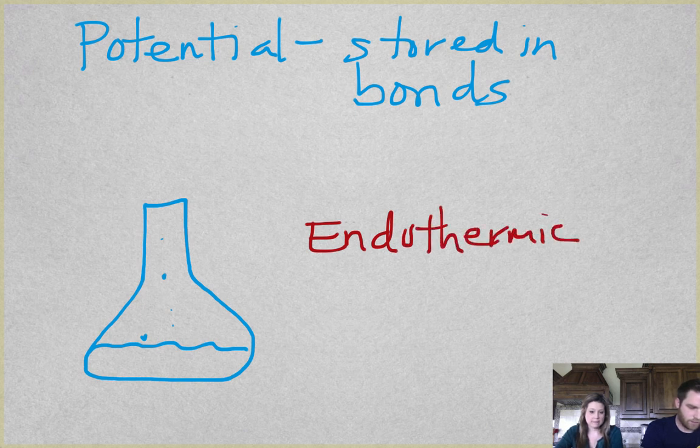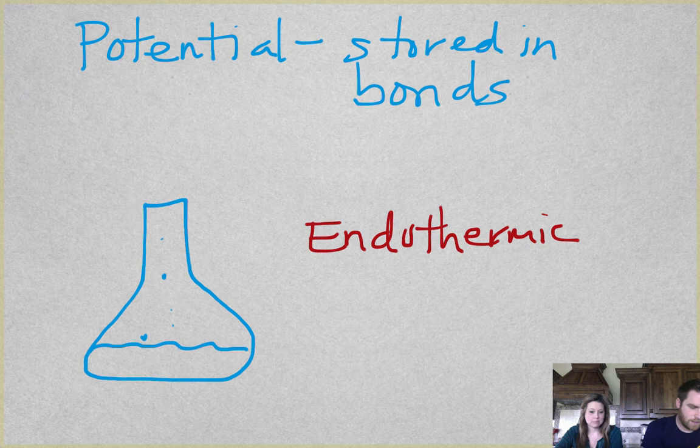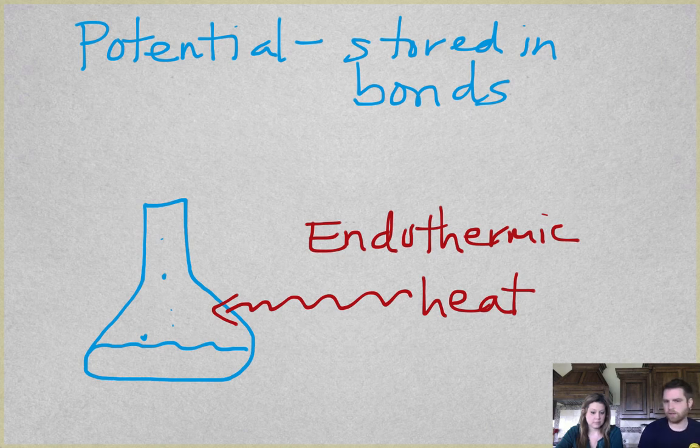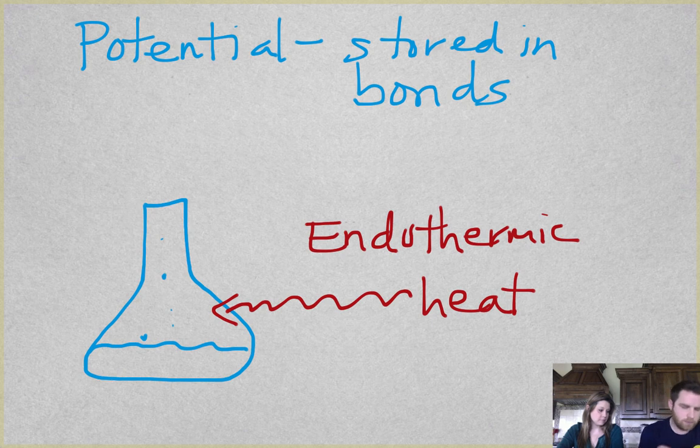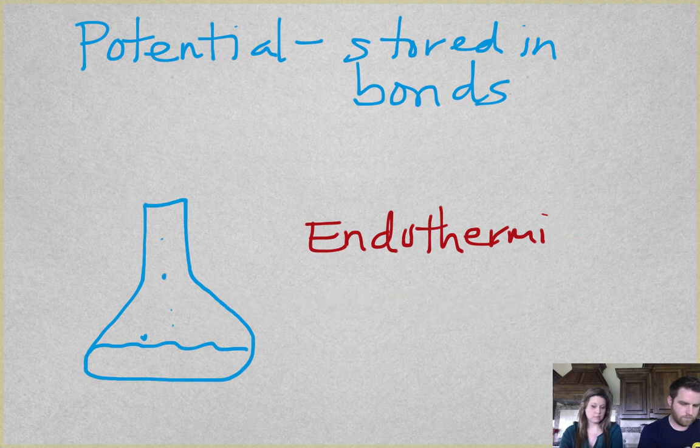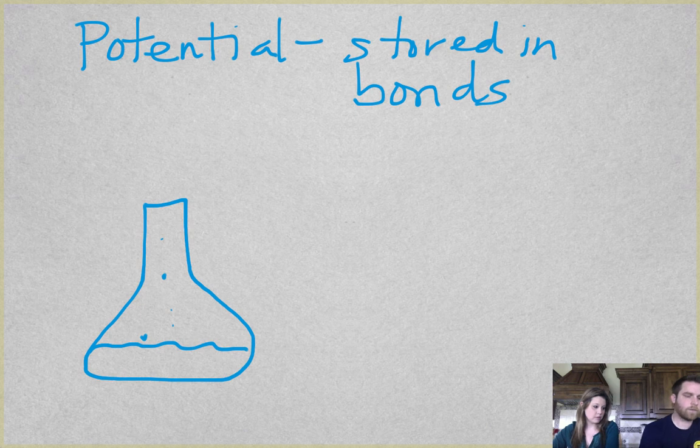Endothermic means heat in. So heat had to be added to the reaction because products had more energy than the reactants. Exothermic means that you break apart your reactants, form new products, and the products have less energy stored. So all of the extra energy is released as heat.